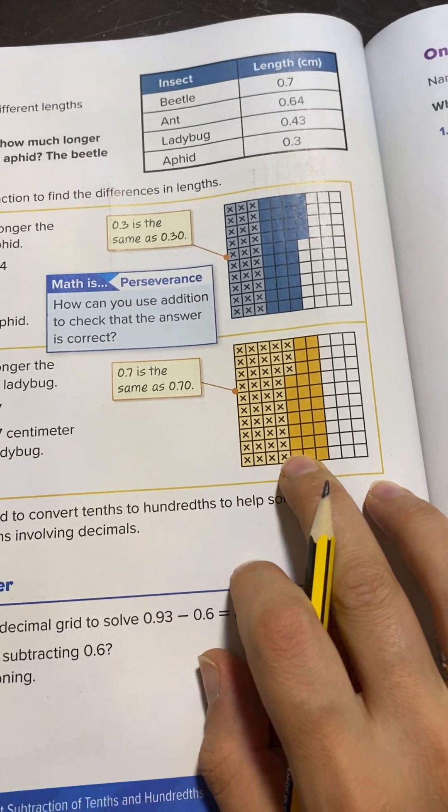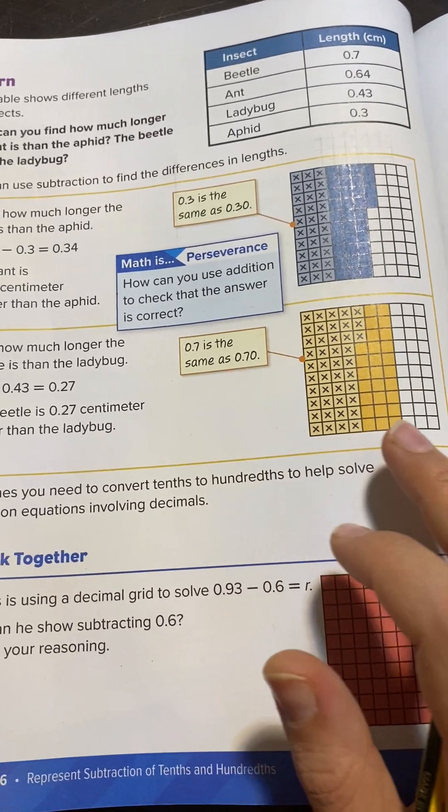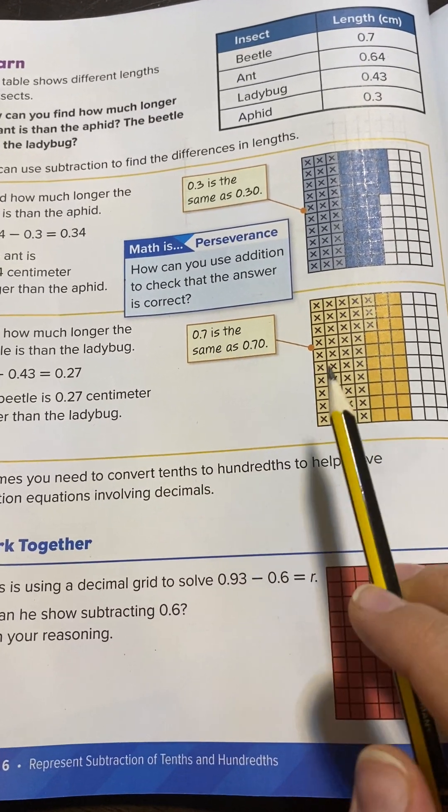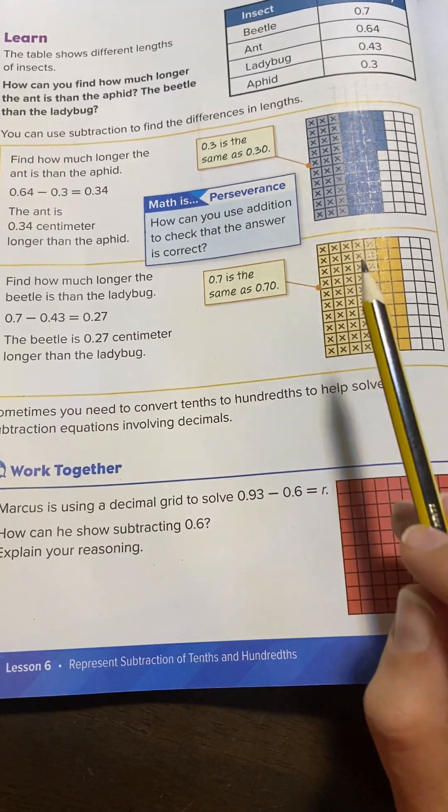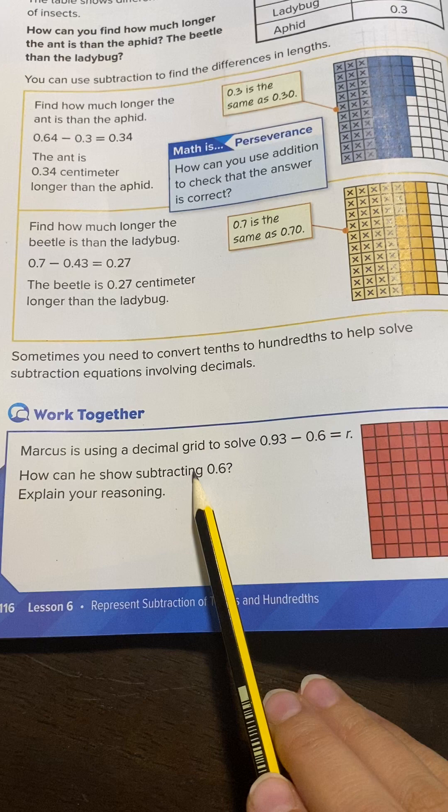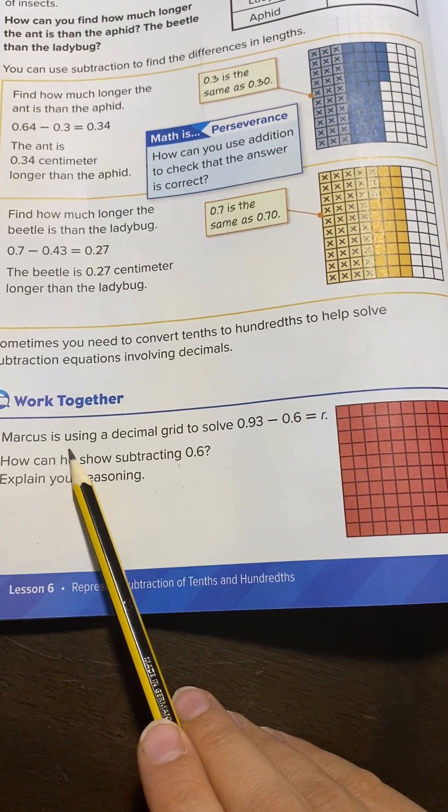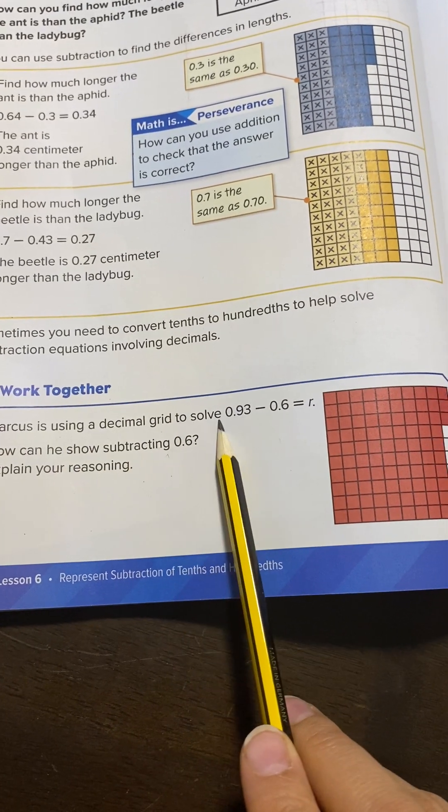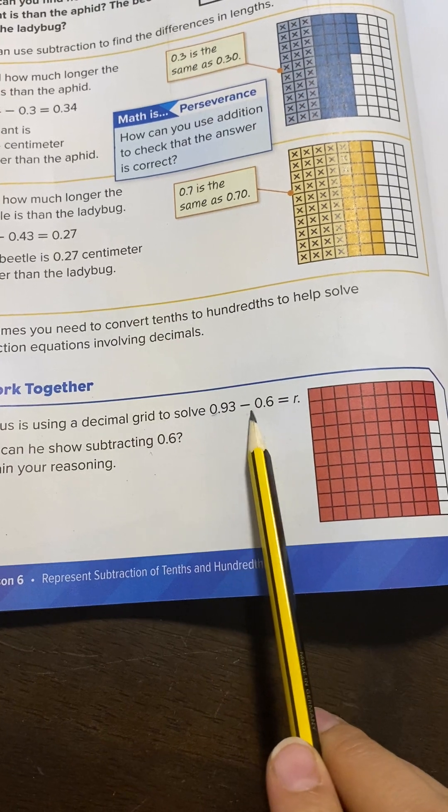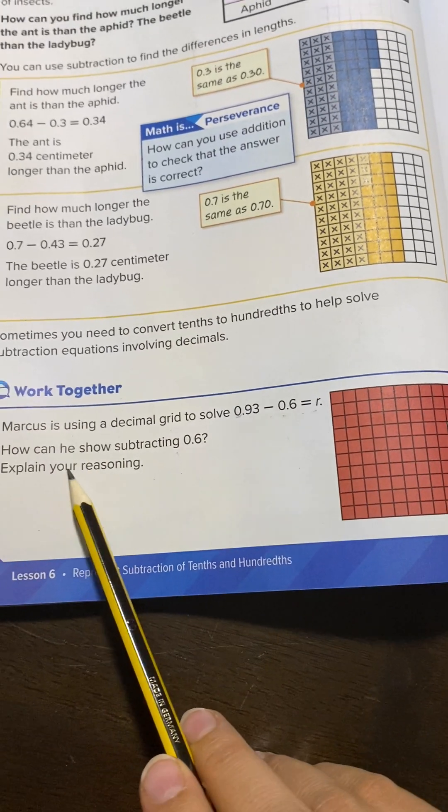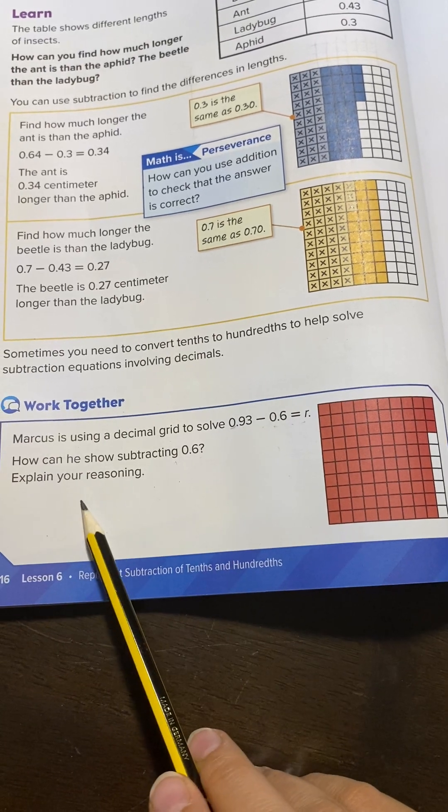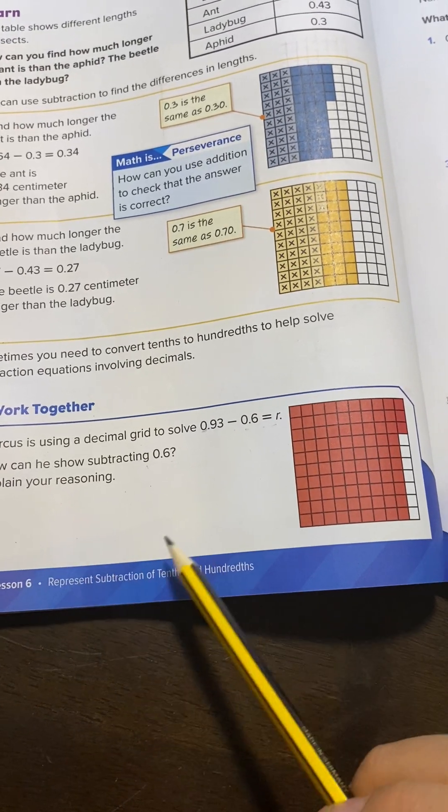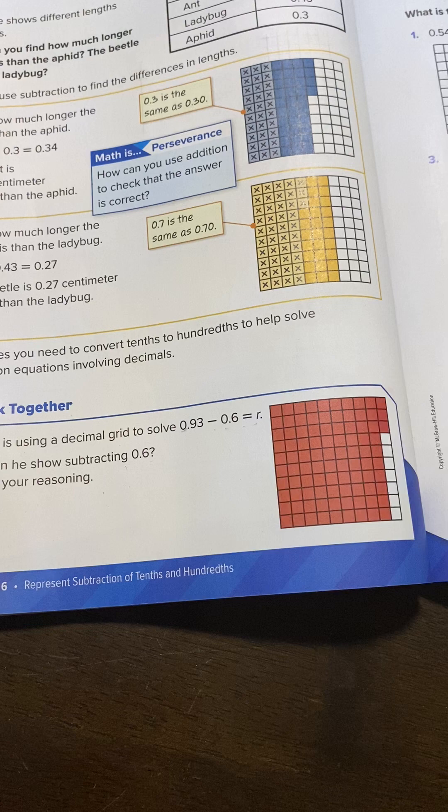In this lesson you will use the grid, and I will teach you two methods: using the decimal grid and using regular subtraction. Let's take this example: Marcos is using a decimal grid to solve 0.93 minus 0.6. How can he show subtracting 0.6? Explain your reasoning using the decimal grid.